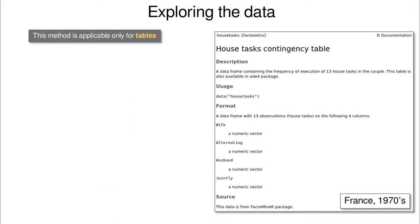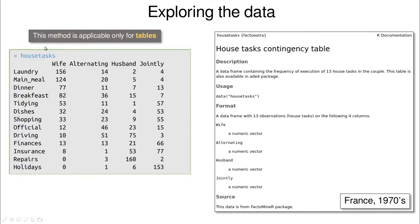Let's explore the data. Now remember that we only can apply this for tables. I'm going to use this table, which is a very funny table collected in France in the 1970s. And basically here they are collecting how many home tasks are performed by the wife, by the husband, alternating between them or jointly between them. So here you have a description of that. Remember, this is a table. So we are counting how many of these elements appear in this other column.